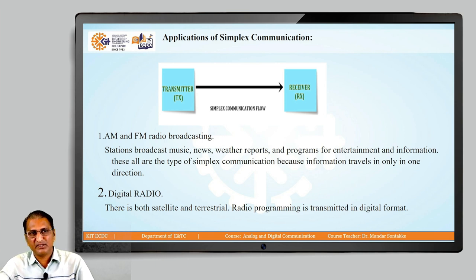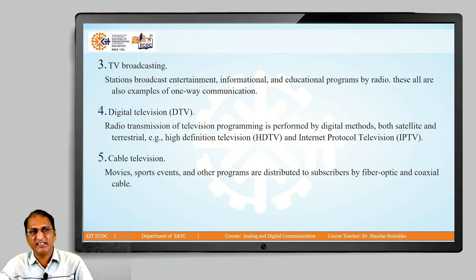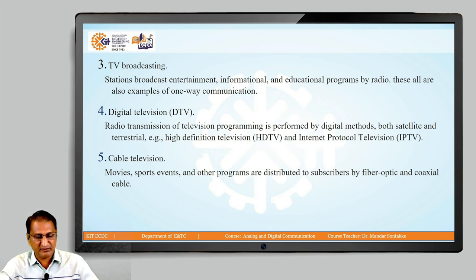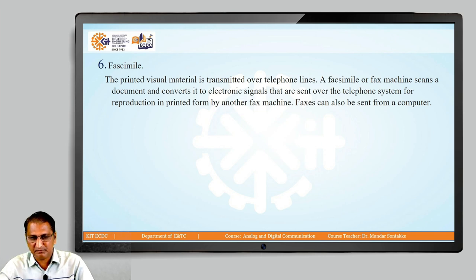Digital radio is another example of simplex. Television — our TV is a receiver; we are just receiving information and not transmitting anything. Digital cable television, or DTV, is also simplex — examples include HD TV and internet protocol television (IP TV). Cable television is also an example of simplex communication. Fax service, where printed visual material is transmitted over telephone lines using a fax machine, is also an example of simplex.